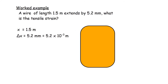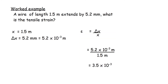Worked example: a wire of length 1.5 m extends by 5.2 mm — what is the tensile strain? Original length = 1.5 m; extension = 5.2 mm = 5.2 × 10⁻³ m. Strain = extension / original length = 5.2 × 10⁻³ / 1.5 = 3.5 × 10⁻³. Remember, strain has no units.